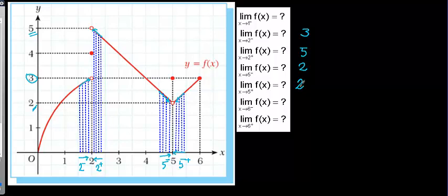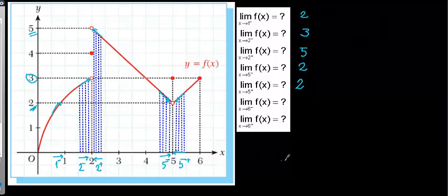When you get closer to six, I also need to check one from the negative side only. As you see, we are not checking all positive and negative sides always. When I get closer to one from the negative side, the y-value on the y-axis is two, so the limit is equal to two.